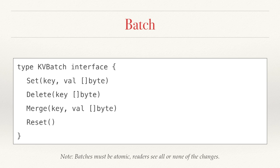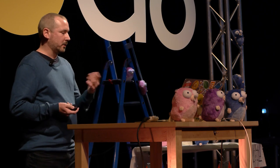So how do writes take place? Well, writes are all done through a batch. There are two methods here: one to create a new batch and another to execute it. The batch has a set method, which is going to update a single key with a value. Delete will delete that key. And one you may not be familiar with is merge — the idea is we're going to read a key, perform some logic, and then write that value back out. That's an optimization that some key-value stores let us take advantage of for higher performance. Another important property of a batch is that batches have to be atomic, so readers are either going to see all these changes or none of them.